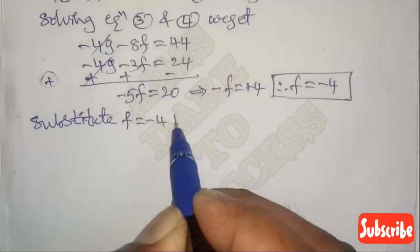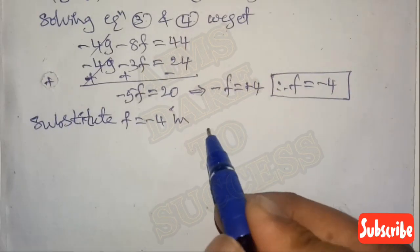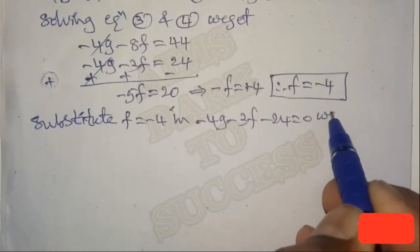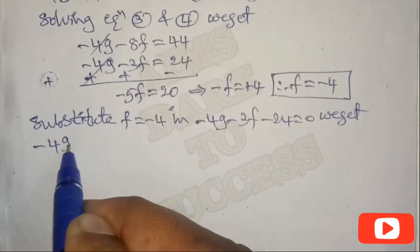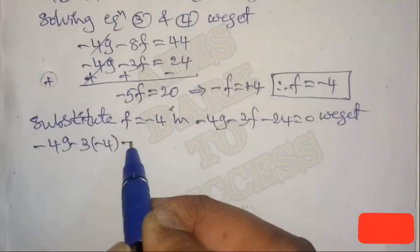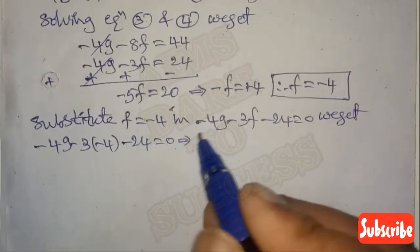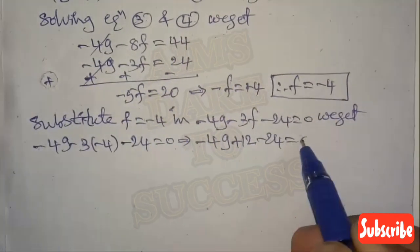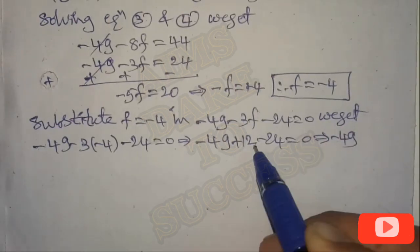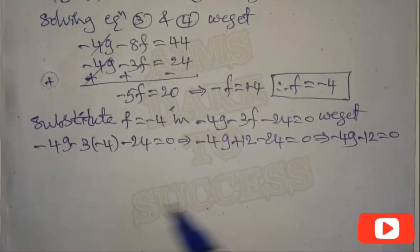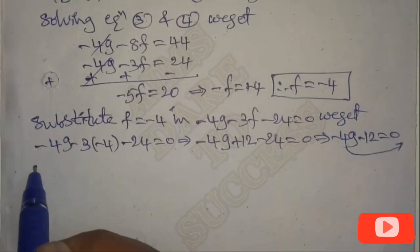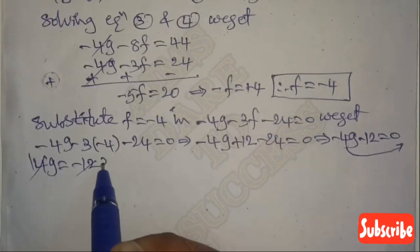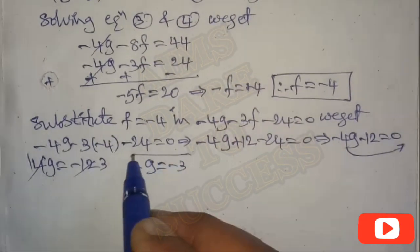Substitute f = -4 into Equation 4: -4g - 3(-4) - 24 = 0, giving -4g + 12 - 24 = 0, so -4g - 12 = 0. Moving to the right side: 4g = -12, therefore g = -3.